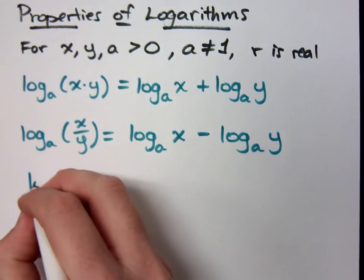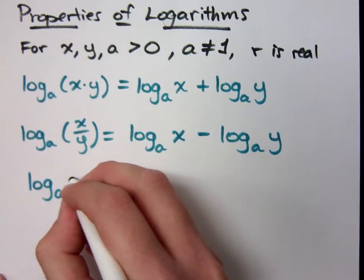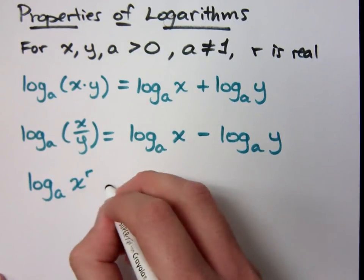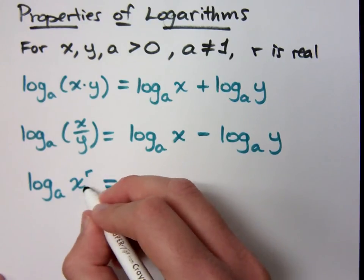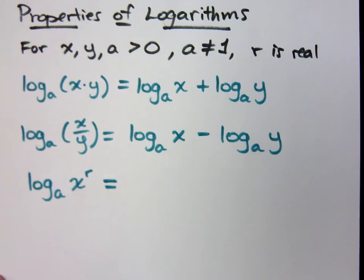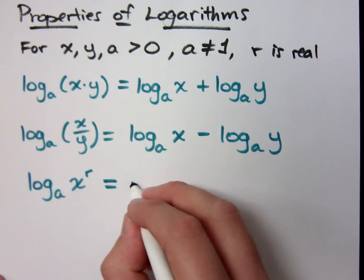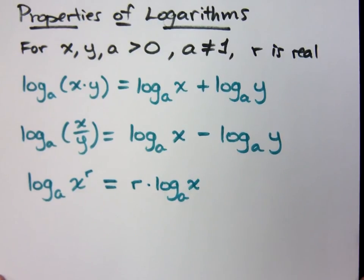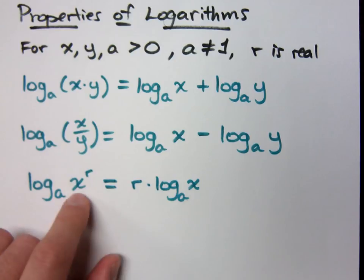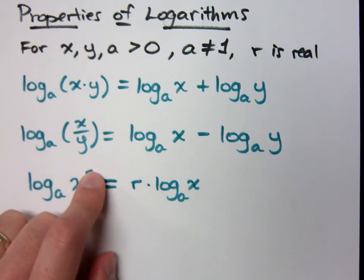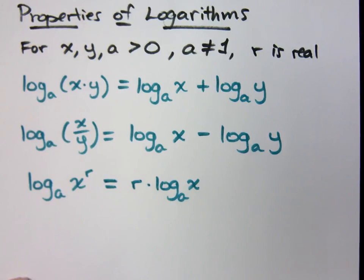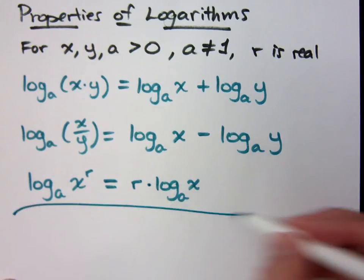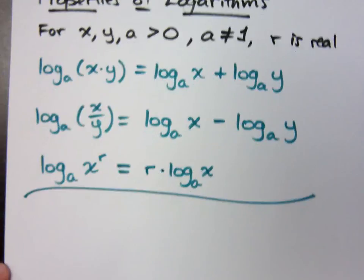Here's one last property, which is really neat — it's a real time saver. Log to the base a of x to the r: that means you have r factors of x. If you wrote that out, you'd have log x plus log x plus log x, all those log x's added together — r of them. The connection with exponents: if you have a power to a power, you multiply the exponents.